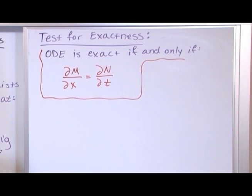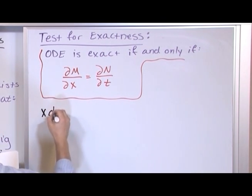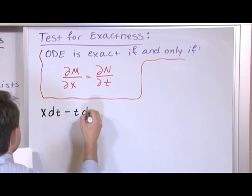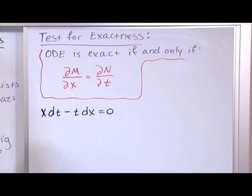So let's say we have a problem, a differential equation, x times dt minus t times dx is equal to zero. And first what we want to do for all these problems is test to see if it's exact or not and then if it is exact solve it. And then of course if it's not exact we can just stop.